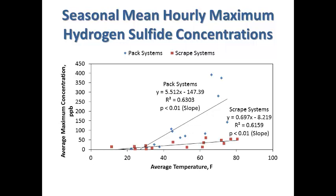We see lower values for the scrape systems and higher values for the pack systems, with more variability for the pack systems. This made sense because hydrogen sulfide is a product of anaerobic breakdown — breakdown in the absence of oxygen. When you have that pack system, you have manure trapped in there and not exposed to as much oxygen, so there's more potential for hydrogen sulfide production. That's a microbial process in a very complex biological environment, and from biology we know those microbes are very sensitive to temperature. The packs in these farms were also variable in age, materials, and heights — just another factor that led into some of that variability.